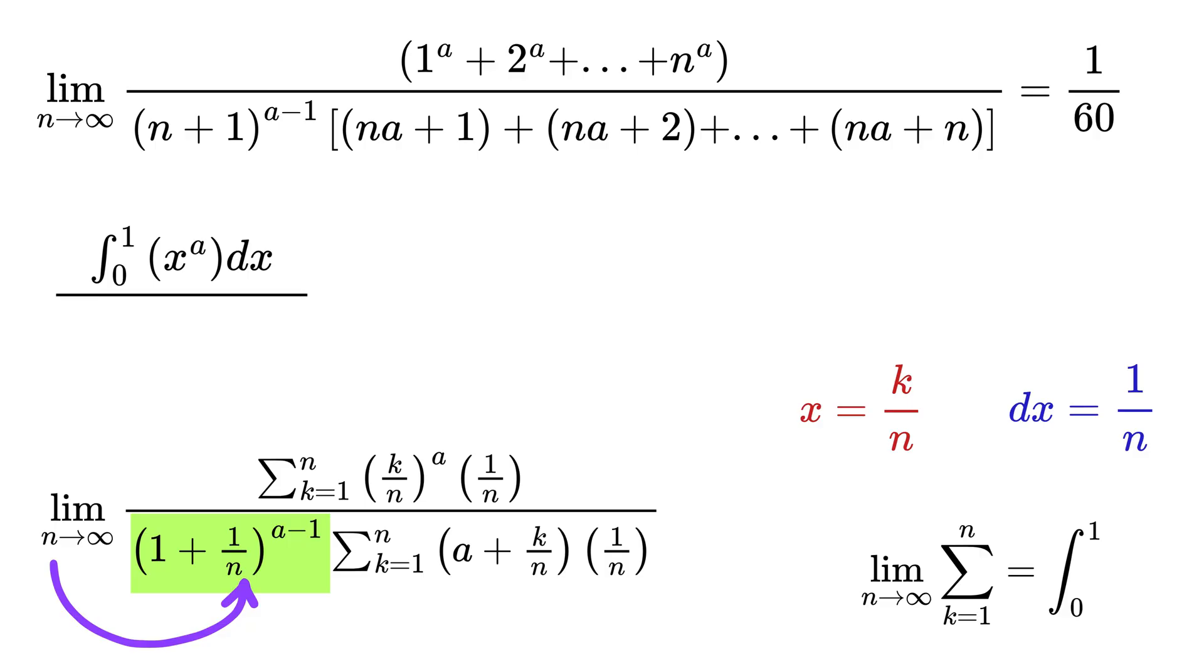Now for this part of the denominator, if we put n as infinity, what will we get here? Yes, right, we will get 1 raised to a minus 1, which is simply 1. And this part of the denominator will be simply integral 0 to 1 of (a plus x) times dx, and this equals 1 over 60.